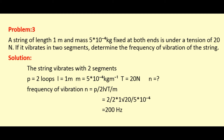The frequency of vibration formula is N equals P by 2L multiplied by root of T by M. Here P is 2 loops, so 2 divided by 2 times L value 1 meter, then root of tension T which is 20 divided by M value 5 × 10 to the power minus 4. Simplifying these values, we get the answer 200 Hz. So the frequency of vibration is 200 Hz.